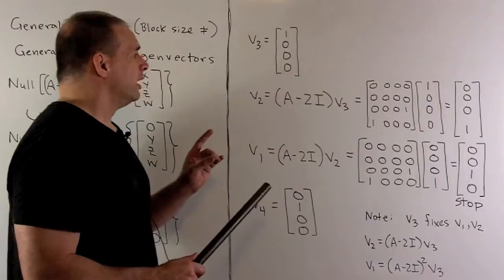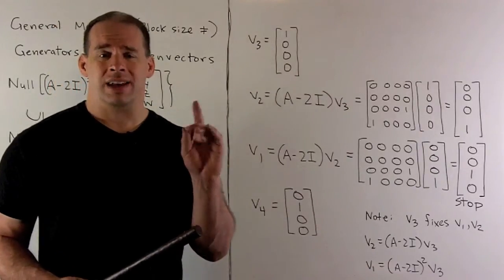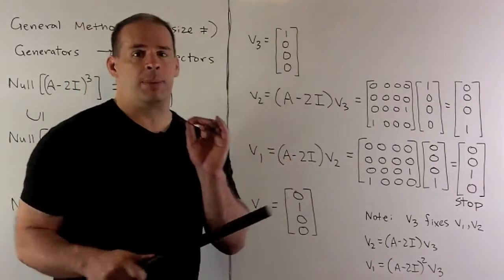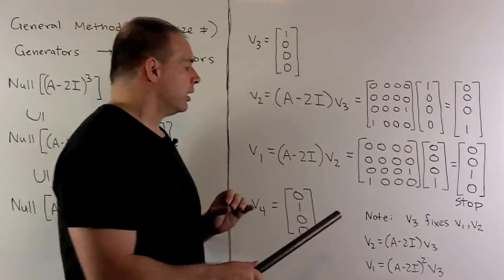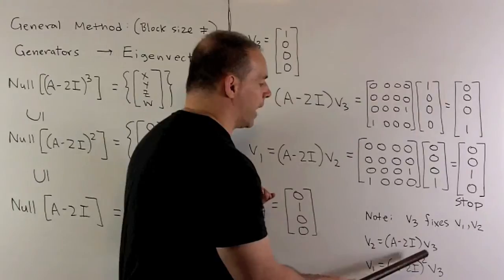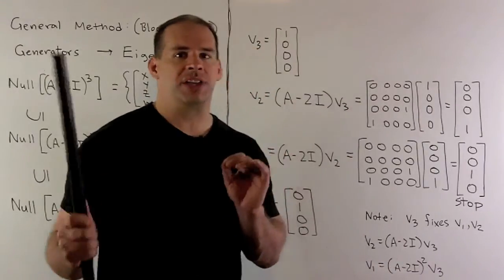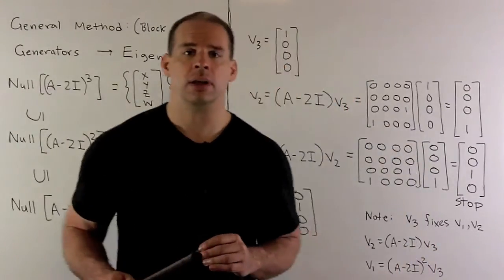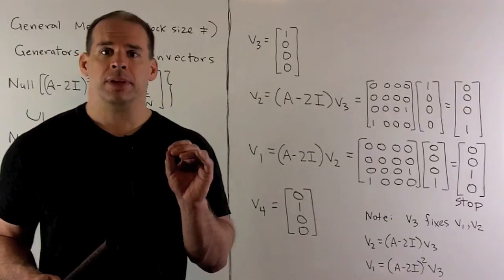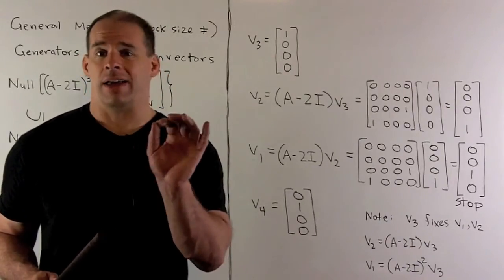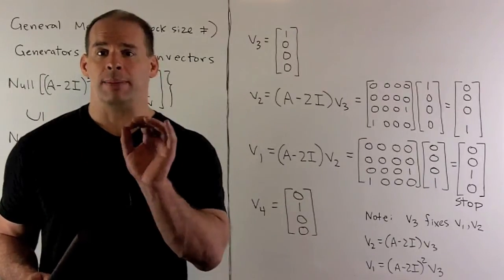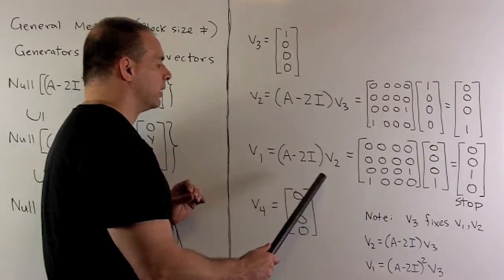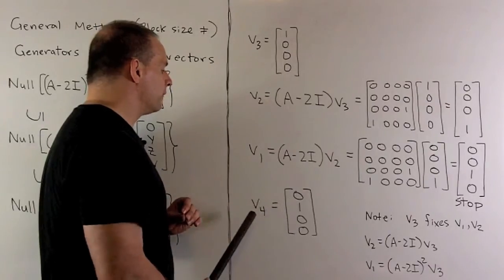Note, if we didn't have the equations from the previous board, not a problem. We just identify this vector here that's a generator, and then we just keep applying A minus 2I. So V2 is A minus 2I times V3, V1 is A minus 2I squared times V3. Then, if we apply it one more time, we get 0, because V3 is in this null space. That's our three-by-three block. To get the remaining block, we note it's a single block of size 1. That means we're going to have to use an eigenvector. I can use any eigenvector that's not in the eigenspace for the three-by-three block. So I'll go with [0,1,0,0] for V4.